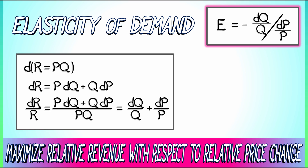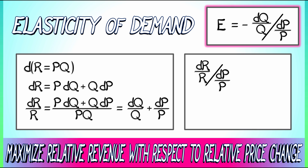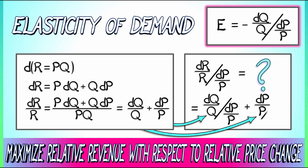What is it we're trying to get at? We want to maximize relative revenue with respect to relative price changes. That means we want to take the derivative of relative revenue with respect to relative price and set it equal to zero to find the maximum. We compute dr over r divided by dp over p. Substituting in what we know about dr over r and dividing through by dp over p, we get dq over q over dp over p plus one. That second term simplifies to one; the first term is, by definition, minus E. So this derivative of relative revenue with respect to relative price is one minus E, and it vanishes — it has a critical point precisely where E equals one, what economists would call perfect elasticity.